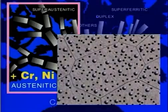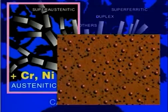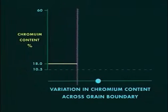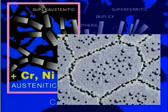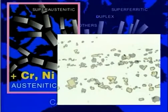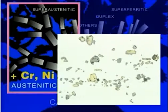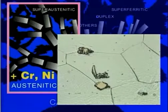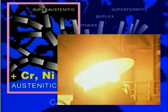Although austenitic steels are easy to weld, under some conditions chromium-carbide forms at grain boundaries in the heat-affected zone. The migration of chromium atoms to form the carbide leaves insufficient chromium to form a passive film, and corrosion can occur in these regions. One solution is to use steels containing either titanium or niobium. They form stable carbides, and so reduce the amount of carbon available to form chromium-carbide. These stabilised steels are still used for heavy sections, but modern steel-making methods make them unnecessary for thinner material.